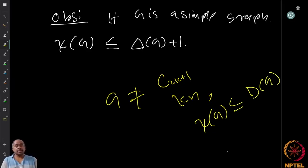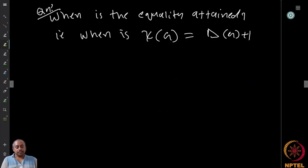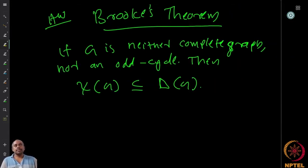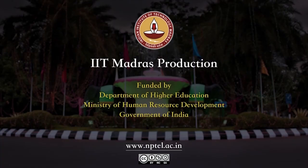So Brooks' theorem states: if G is neither a complete graph nor an odd cycle, then χ(G) ≤ Δ(G). This is a claim that requires proof — I will give it as an exercise. The equality χ = Δ + 1 is attained exactly when the graph is a complete graph or an odd cycle. For all other graphs, the chromatic number is at most the maximum degree.